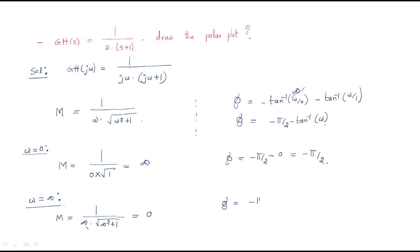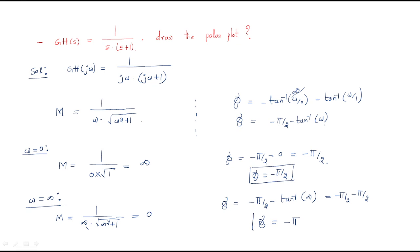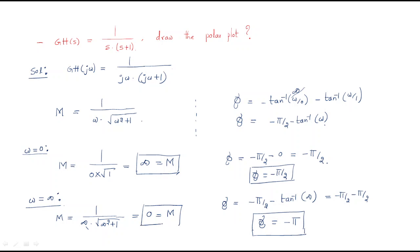For the phase at ω = 0: substituting gives −π/2 − tan⁻¹(0) = −π/2. At ω = ∞: the phase is −π/2 − tan⁻¹(∞) = −π/2 − π/2 = −π. So at ω = 0, magnitude is infinite with phase −π/2, and at ω = ∞, magnitude is 0 with phase −π.